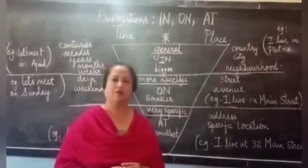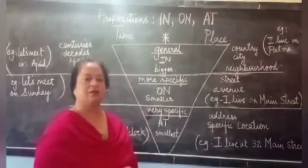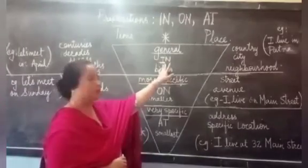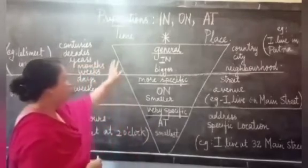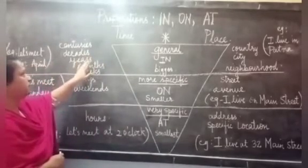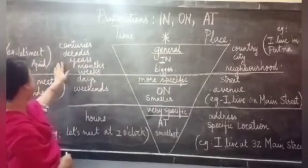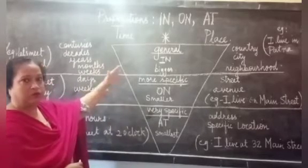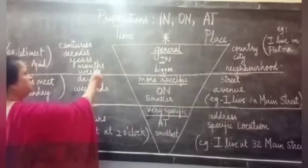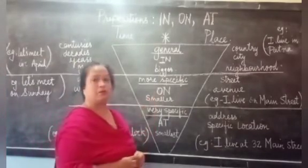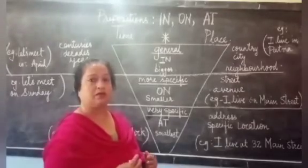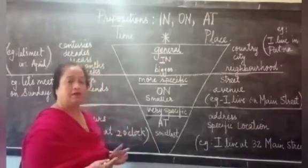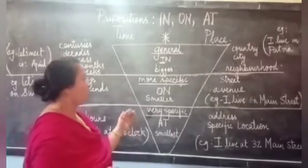I have drawn something on the board showing you how to use 'in', 'on', and 'at' for both time and place. Let us start with 'in'. 'In' is used in a general form of time when we talk about centuries, decades, years, months, or weeks. For example: Let's meet in April — I am talking about a general month, not any specific date. For preposition of place, 'in' is used for a general country, city, or neighborhood. For example: I live in Patna.